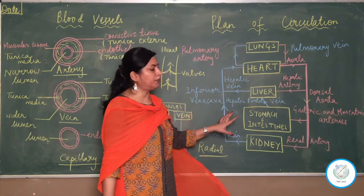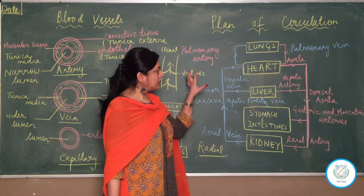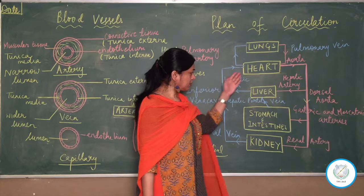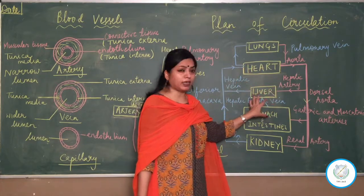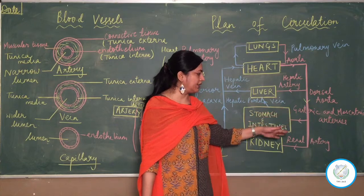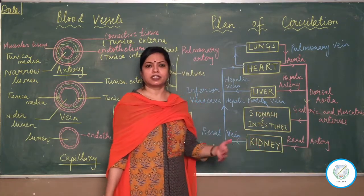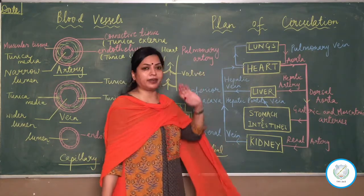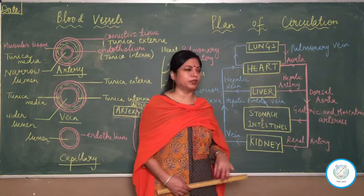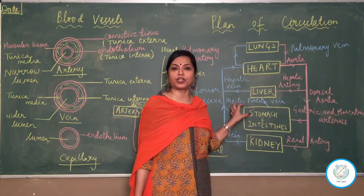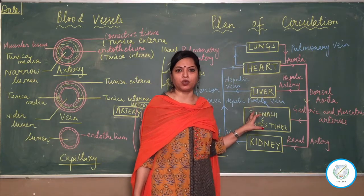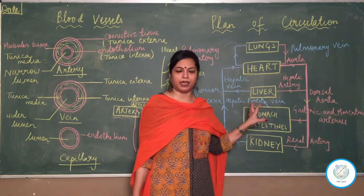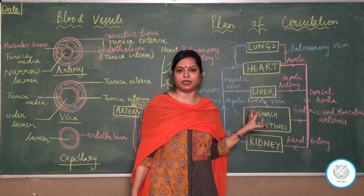These are the major blood vessels in your course: pulmonary artery, pulmonary vein and their functions, the aorta's function, hepatic artery, hepatic vein, hepatic portal vein — very important — gastric and mesenteric arteries, and renal artery. There are many more arteries supplying blood to reproductive organs, lower limbs, head, and neck region, but they are not in your syllabus. I hope the differences between the three kinds of blood vessels and the major vessels supplying blood to different organs and collecting deoxygenated blood is clear to you.